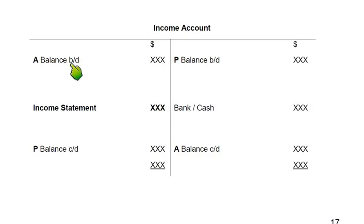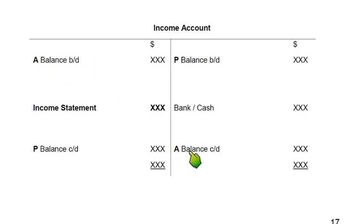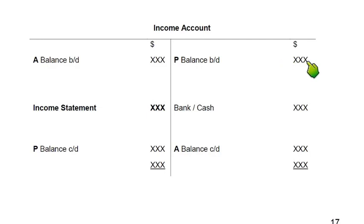Accrued income is the rent that will be received sooner or later — it is an asset for you. The balance BD of an asset always comes on the debit side, so balance CD comes on the credit side. Then there is prepaid income, which is a liability for you — if for whatever reason you do not wish to continue the rental agreement, the tenant will ask for the advance money back. This liability will remain until you have completed the whole year and earned all the income.